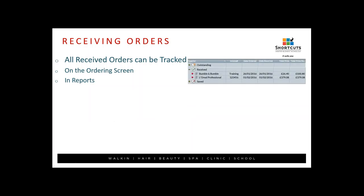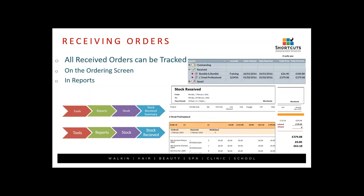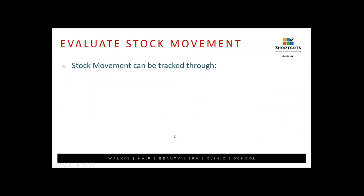You can also track received orders on the Ordering screen under Received, and in Reports via Tools, Reports, Stock — Stock Received Summary report — which gives an overall view of how much you've ordered, when you placed the order, and when you received it. There is also a Stock Received report which provides a more detailed breakdown of each product received and how many days elapsed between ordering and receiving.